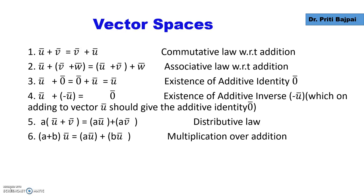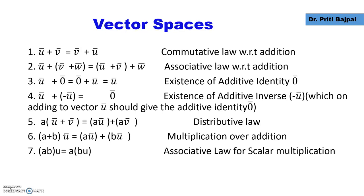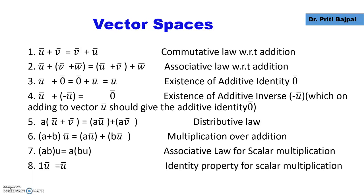We also have three more properties. One is the distributive law: when we add two vectors and multiply by a scalar A, it gives A·U + A·V. The next property states that if we add two scalars and multiply by a vector, it is the same as multiplying the individual scalars by the vector and then adding. Then we have AB·U = A·(B·U), which is the associative law for scalar multiplication. Finally, the identity property for scalar multiplication means that when we multiply vector U by 1, we get the vector back.